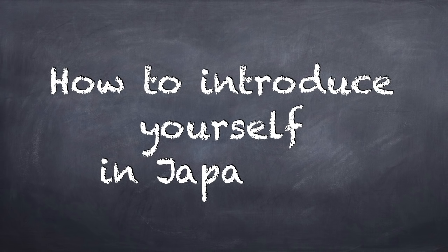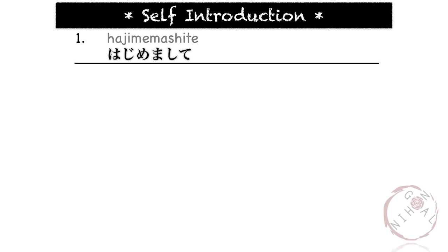How do you introduce yourself in Japanese? Self-introduction is jiko shokai — jiko means 'self,' shokai means 'introduce.' Usually when you are new at a company, workplace, or school, they ask you to do a jiko shokai. The first word you say is hajimemashite, meaning 'how do you do' or literally 'for the first time.' You say hajimemashite and bow, then tell them your name.